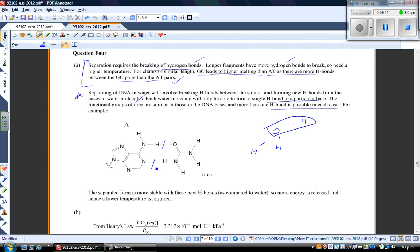And the functional groups of urea are similar to those in the DNA bases, and more than one hydrogen bond is possible in each case. For example, you have two hydrogen bonds here. So this is urea. And you have one, two hydrogen bonds between your urea. And this could be a base. And then this is the rest of the strand. So the separated form is more stable with these new hydrogen bonds as compared to water. So energy is released, and hence a lower temperature is required.